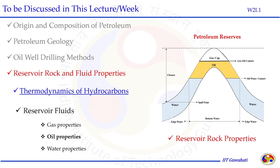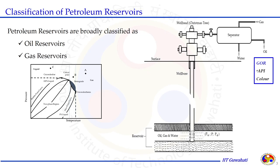In this lecture, we are going to discuss the thermodynamics of hydrocarbon. Reservoir rock properties will be discussed after discussing the reservoir fluid properties — for example, gas, oil, and water properties. Broadly, if we classify the reservoir, those are oil reservoir and gas reservoir. We can classify the reservoir based on GOR, degree API, and color.